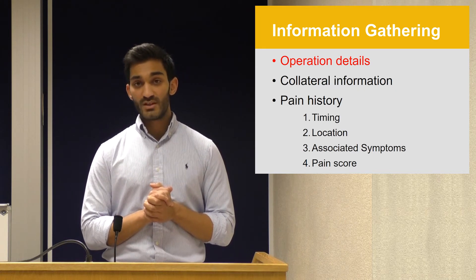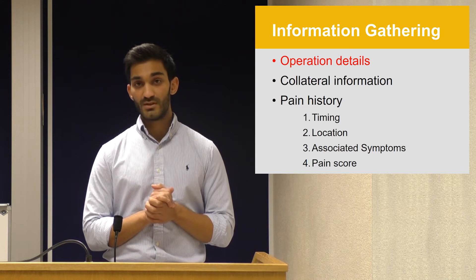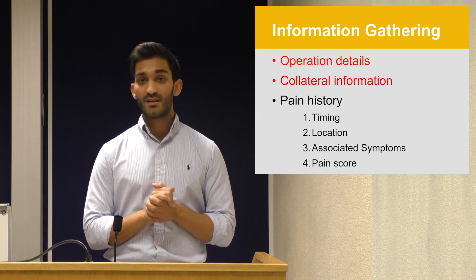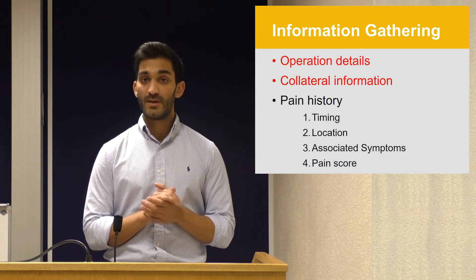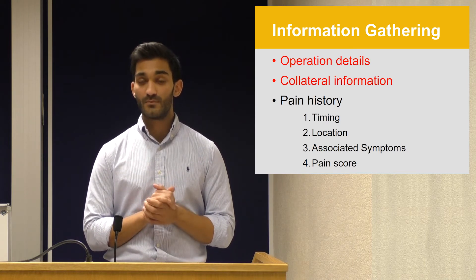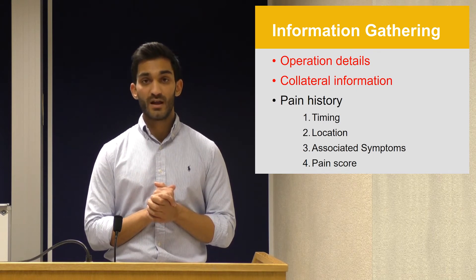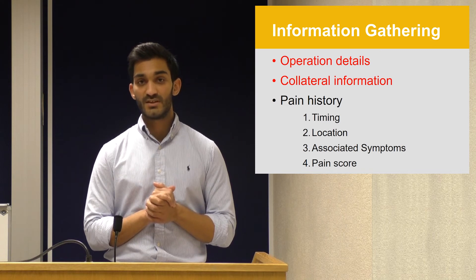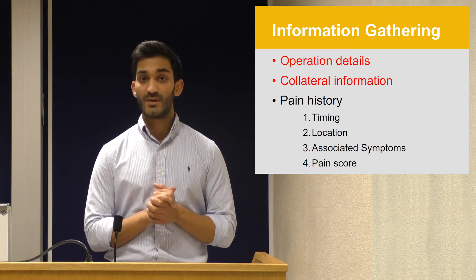Having considered the operation, we can move to collect some other collateral information. We may start with the anaesthetic chart and the drug chart: how recently has the patient had analgesia, and was it effective for them? We can also consider information from the staff — do the nursing staff believe this patient is in significant pain, or is anxiety a significant component?